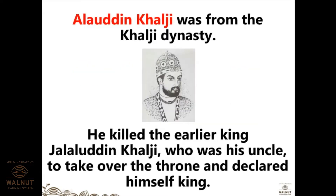Alauddin Khalji was from the Khalji dynasty. He killed the earlier king Jalaluddin Khalji, who was his uncle, and took over the throne and declared himself king. In the Khalji dynasty, Jalaluddin Khalji was the uncle of Alauddin Khalji. Jalaluddin Khalji ruled from 1290 to 1296, and Alauddin Khalji ruled from 1296 to 1316.